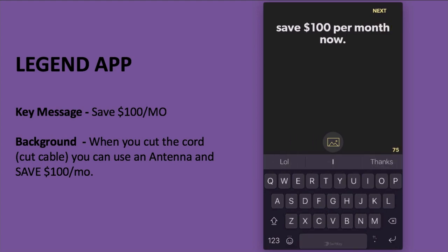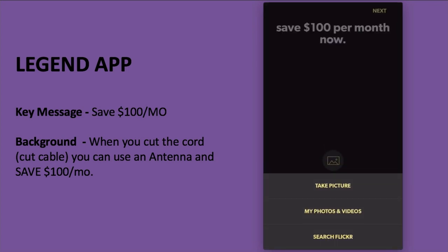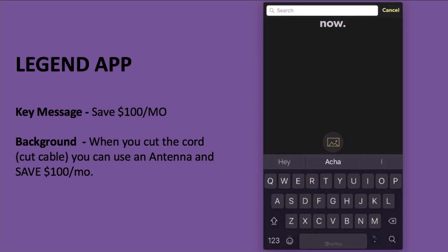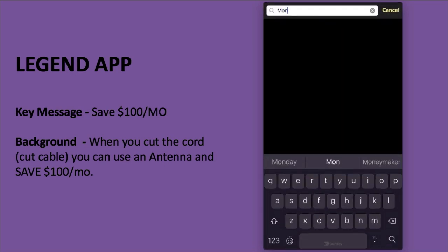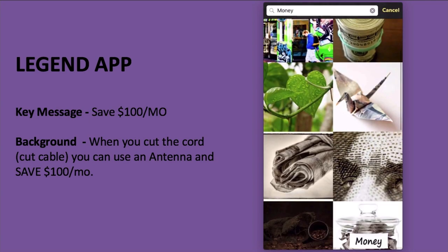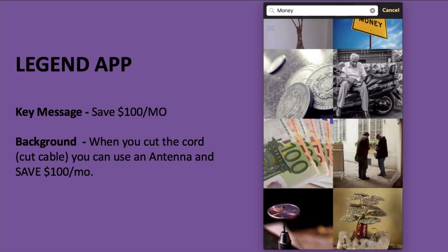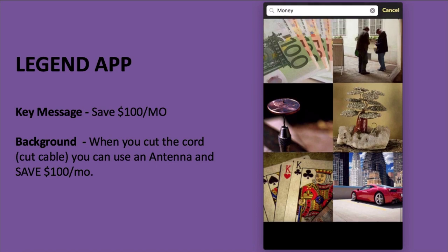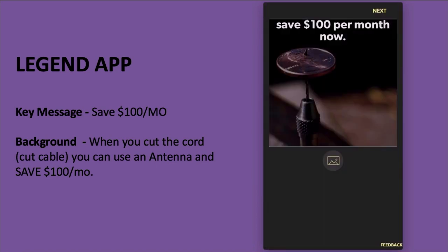Here's a cool thing about the Legend app — look at that camera icon at the bottom. I can click on that and take a picture, go to my photos and videos, or search Flickr. Something relevant to this could be money, so let's search for that. Here are some really interesting images. Let's pick this one. So we have 'save $100 per month' and we've picked the visual that goes with our key message.